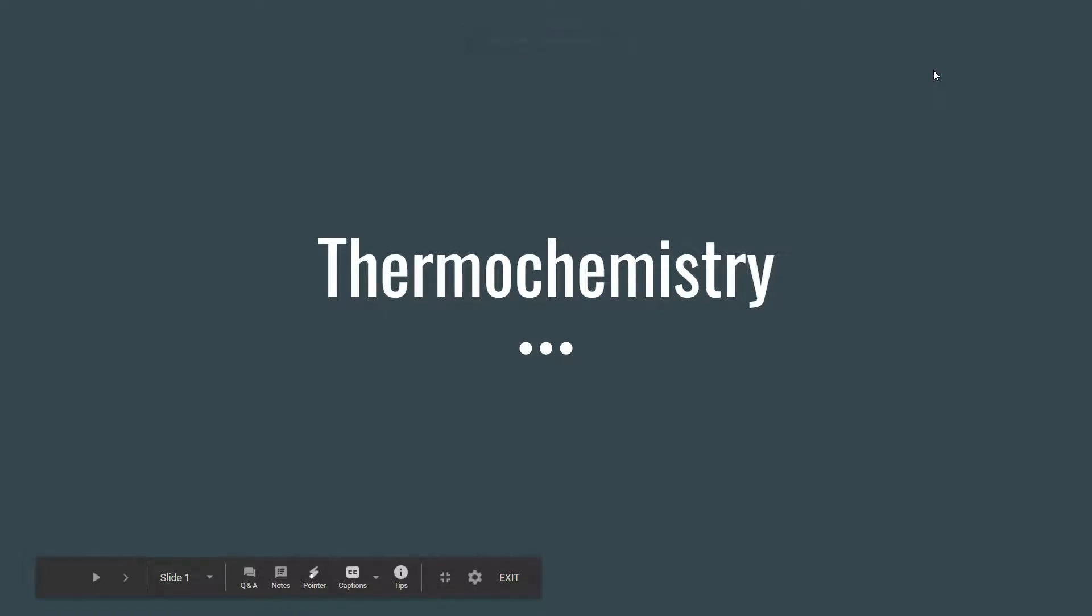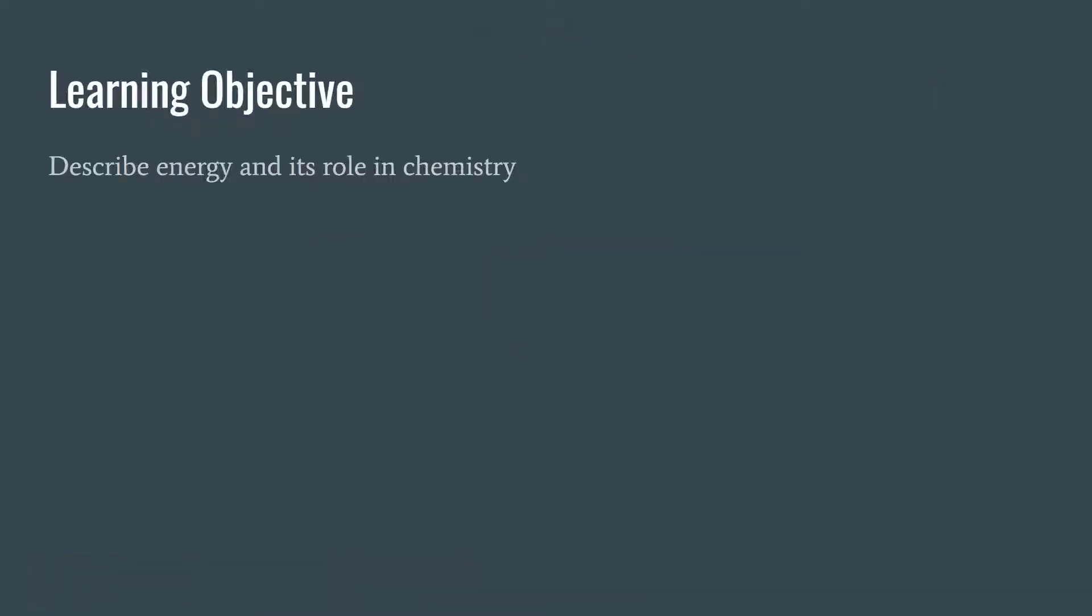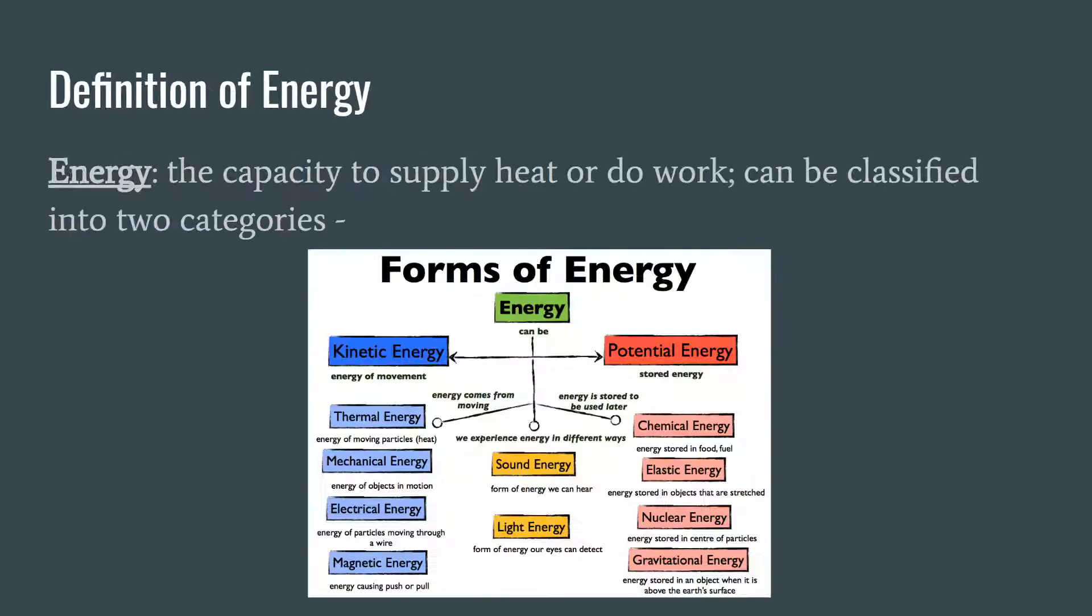Let's take a look at our thermochemistry unit. We're going to start off pretty simple by just describing energy and its role in chemistry. So energy can be defined as the capacity to supply heat or to do work and can be classified into one of two categories.